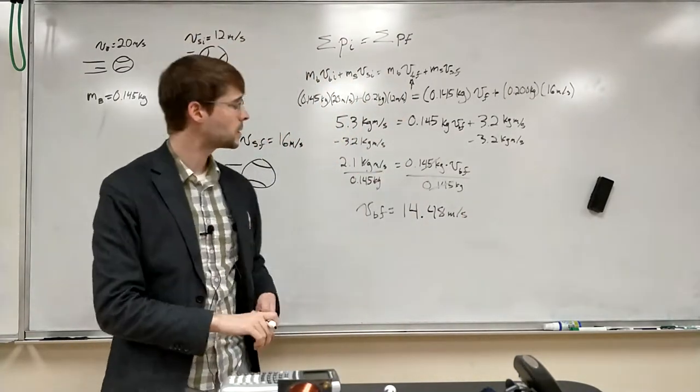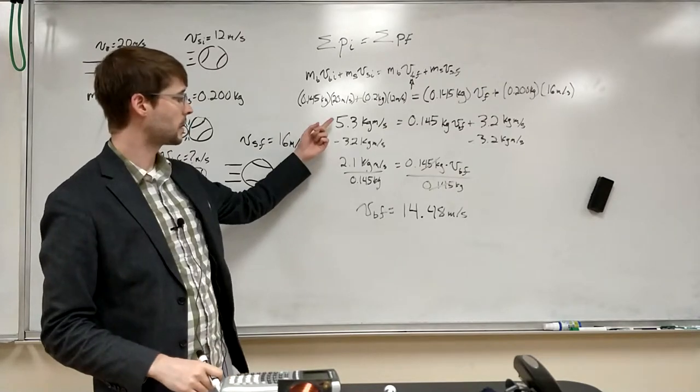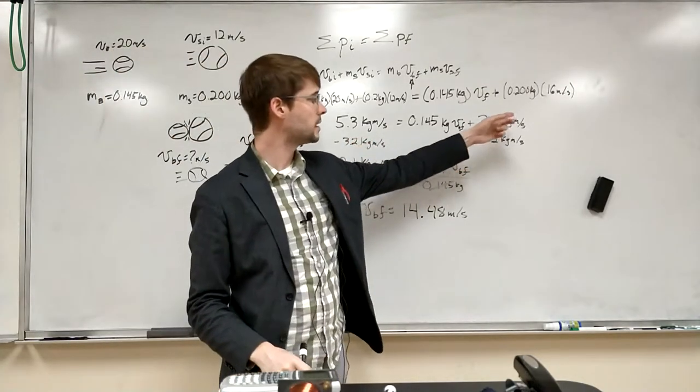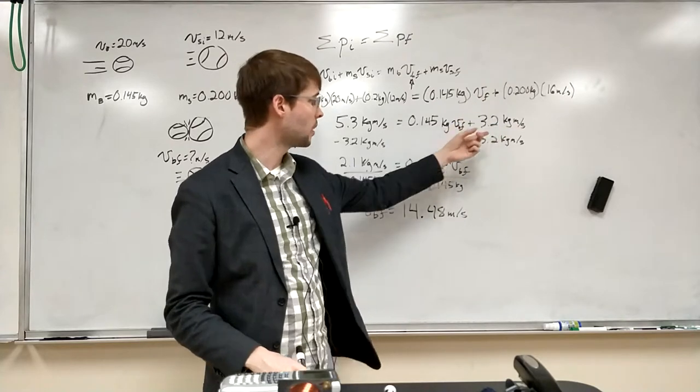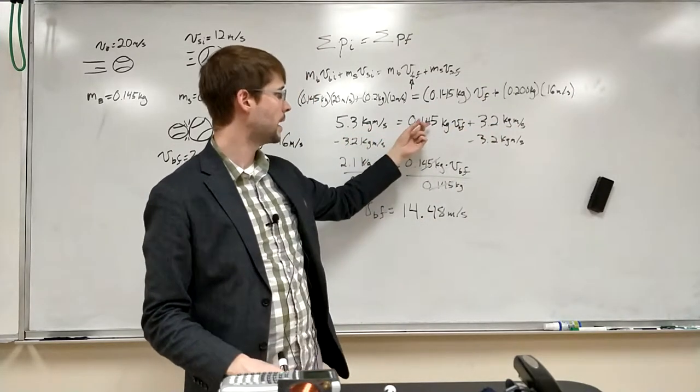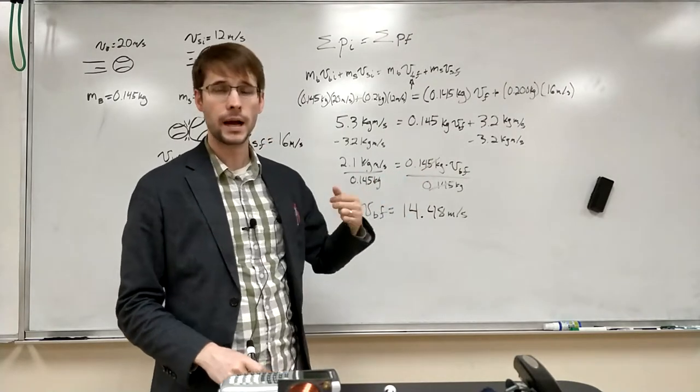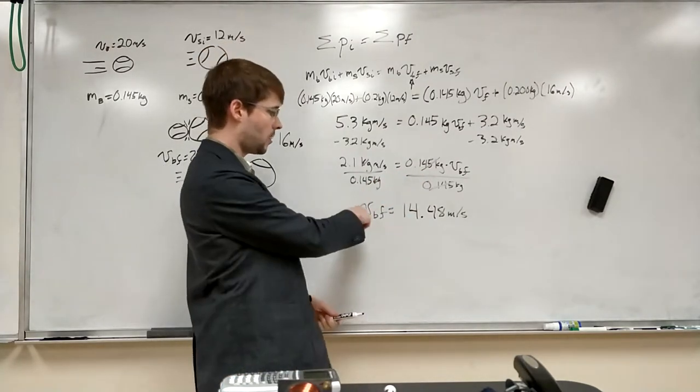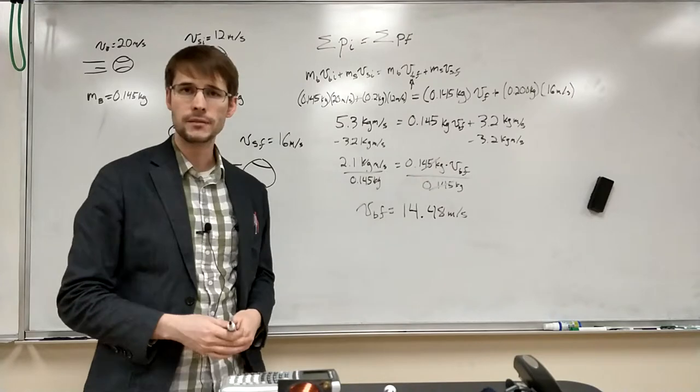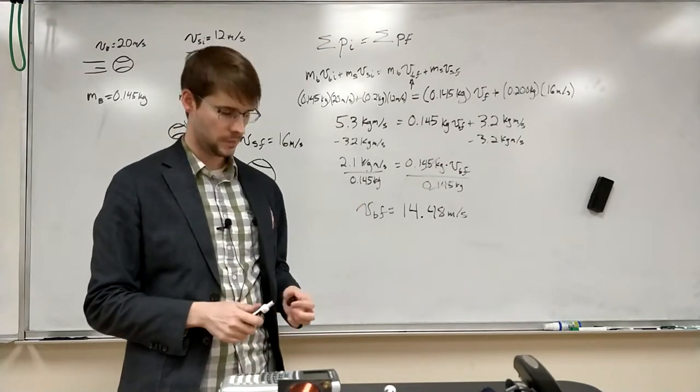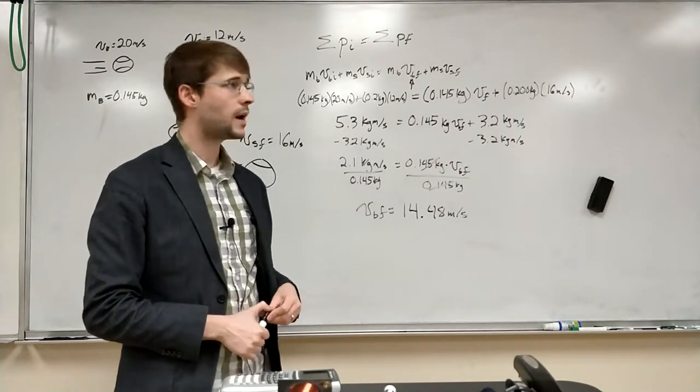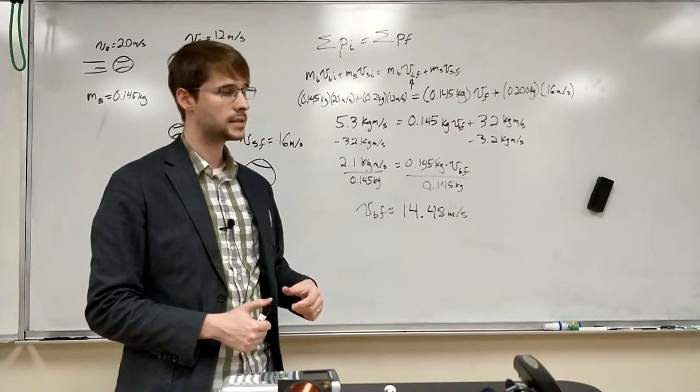So, going through the rest of the algebra, we see we've got to combine our like terms. Bring the momentum of the softball over to the other side. And then, once it's over here all combined, we just have to divide by the mass. And once we got it all said and done, we find that the velocity of the baseball is going to be 14.48 meters per second. It's going to be following behind the softball a little bit slower.